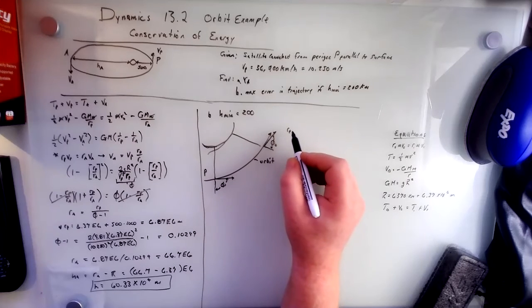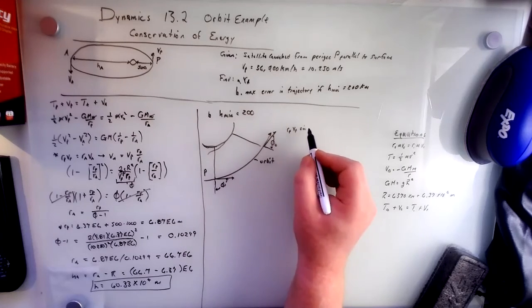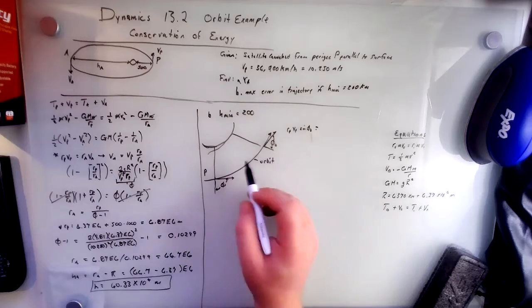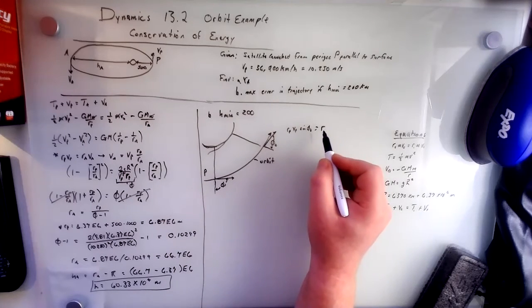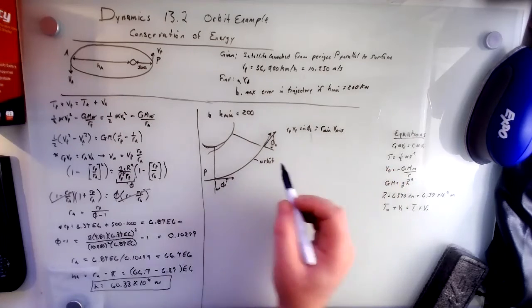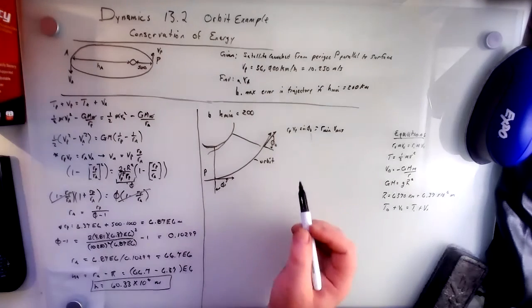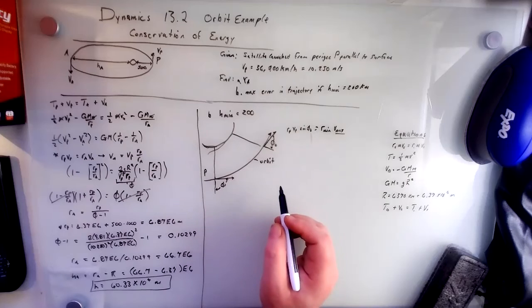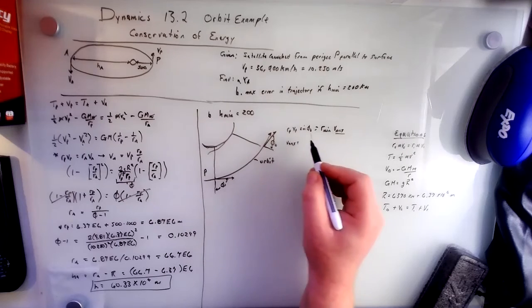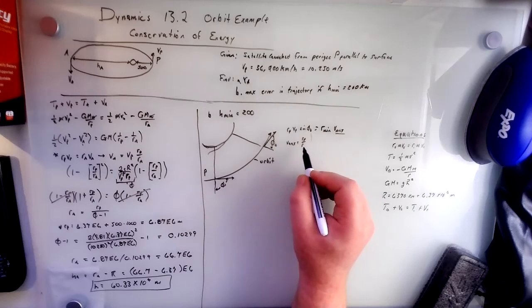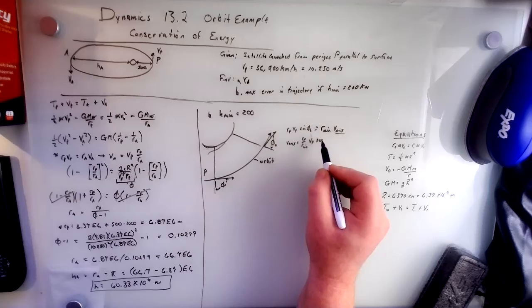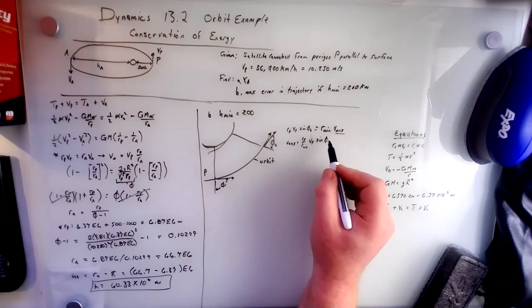By the conservation of momentum, when it's angular, we can say RP vP sine theta naught equals this. And here we get our R is at its minimum and our V is at its maximum, right? So we are closest to the planet and moving fastest. If we solve this for V max, then that is RP over R min times vP times the sine of theta naught.